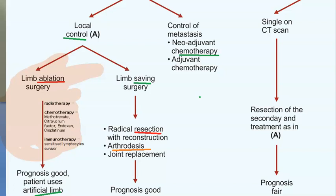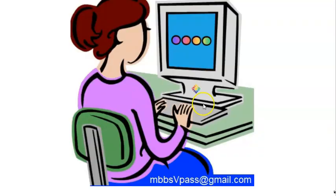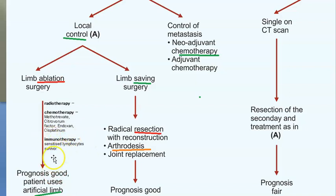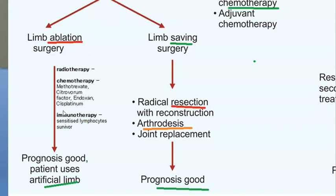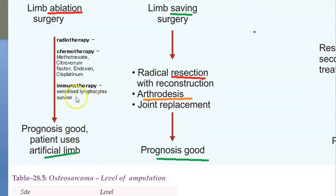Chemotherapy includes methotrexate and citrovorum, among other standard agents. Immunotherapy involves introducing sarcoma cells into a healthy person whose body produces lymphocytes; those lymphocytes are then harvested and injected into the patient. In some cases, amputation of the limb may be required, after which an artificial limb is provided.